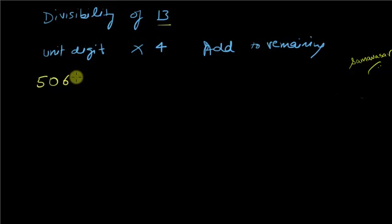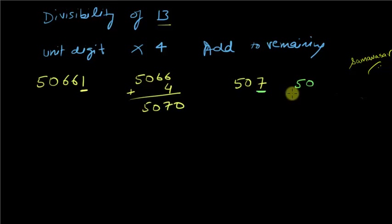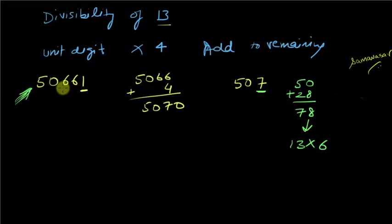Let's say I have the number 50661. The unit digit is 1; multiply by 4 to get 4. Take the truncated number 5066 and add 4 to get 5070. Dropping the trailing zero gives 507. Now the unit digit is 7; 7 × 4 = 28. The remaining number is 50; add 28 to get 78. Since 78 = 13 × 6, it is divisible by 13, which means the original number 50661 is also divisible by 13.